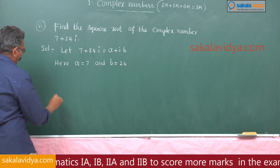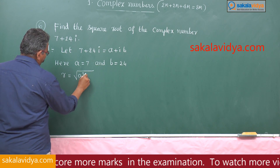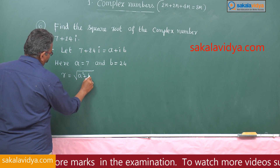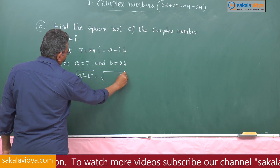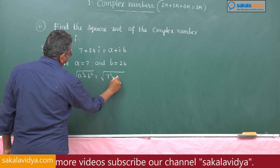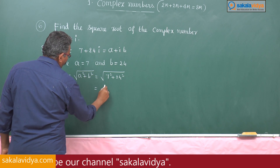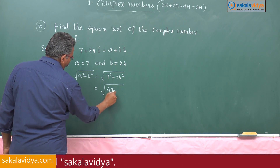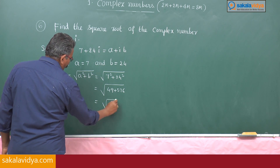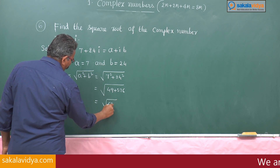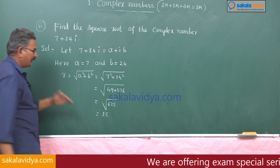Find r: r is equal to root of a squared plus b squared, that is root of 7 squared plus 24 squared, which is root of 625, that is 25. So r equals 25.